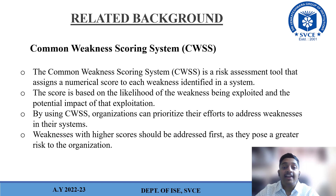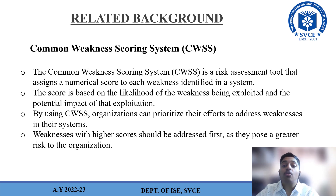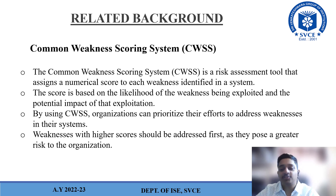For the related background, we also have CWSS, also known as the Common Weakness Scoring System. The Common Weakness Scoring System is a risk assessment tool that assigns a numerical score to each weakness identified in a system. The score is based on the likelihood of the weakness being exploited and the potential impact of that exploitation. By using CWSS, organizations can prioritize their efforts to address weaknesses in the system. Weaknesses with higher scores should be addressed first, as they pose a greater risk to the organization.